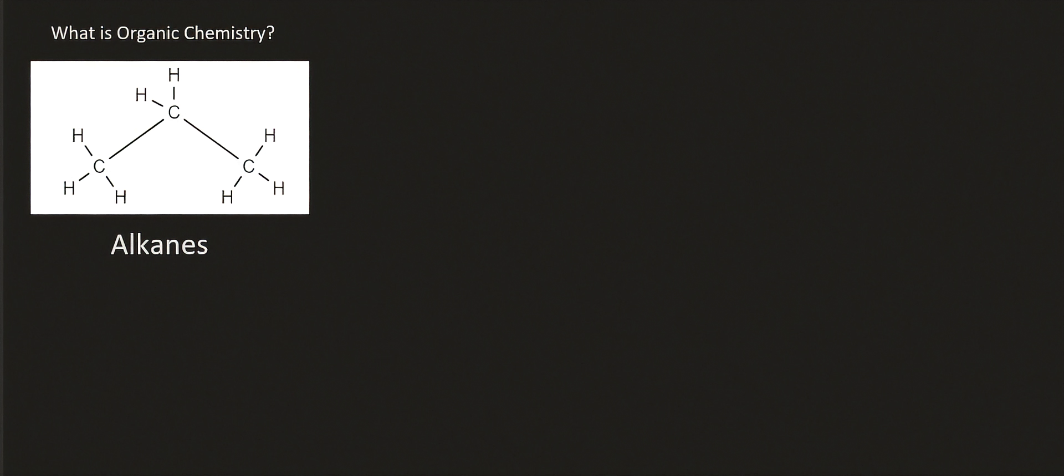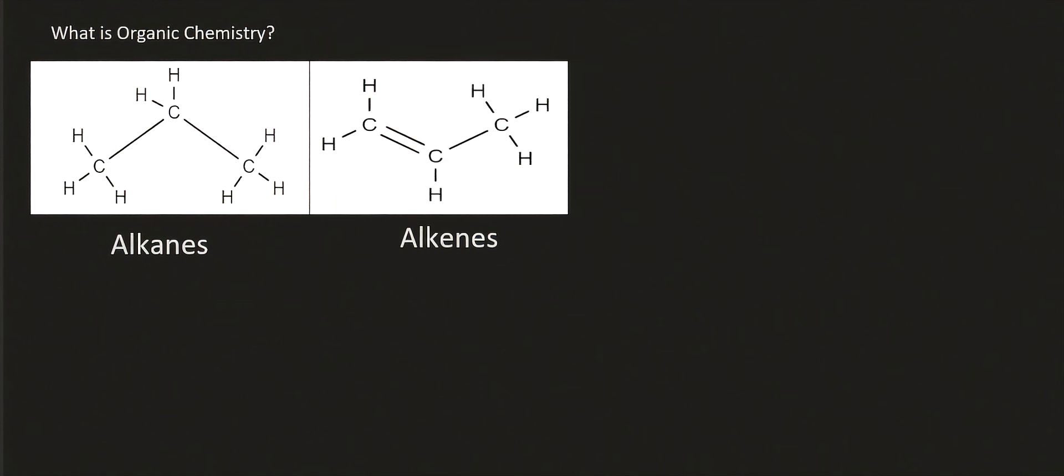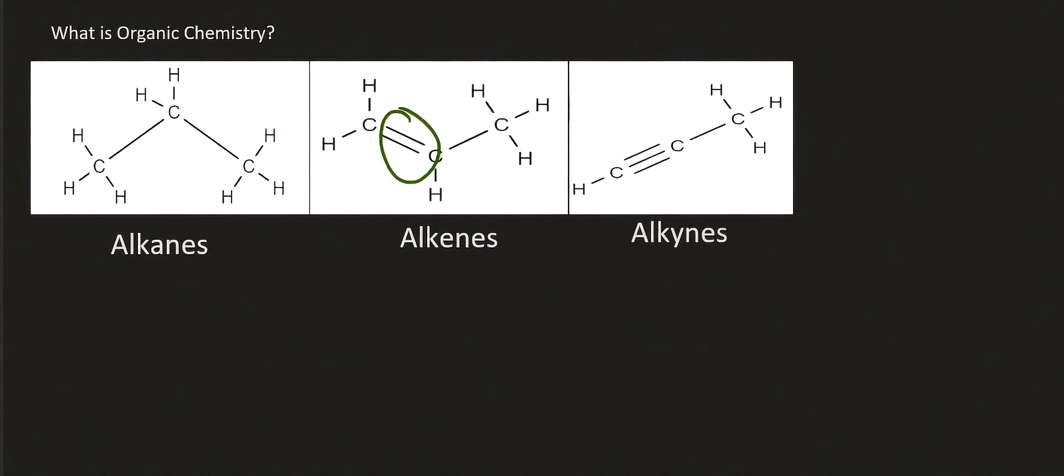Next will be the alkenes, which are almost the same as the alkanes. However, they have a double bond. So notice we can see two lines over there. Next will be the alkynes. Now the alkynes also consist of carbon and hydrogen only. But what they have is a triple bond. Notice the alkanes had single bonds, whereas the alkenes have a double bond. And then the alkynes have a triple bond.